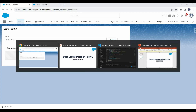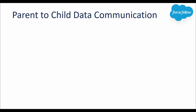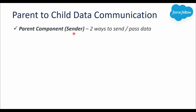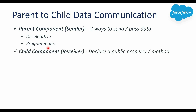Let's understand what we need to do to pass data from parent to child. The parent component will be the sender. To send data to the child we have two ways: declarative and programmatic. In the declarative approach, no additional code is required, but in the programmatic approach we have to write additional JavaScript code. At the child component, we just need to declare a public property to receive data from the parent, using the API decorator.